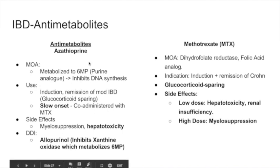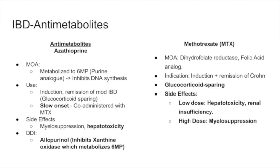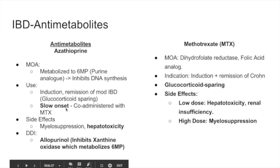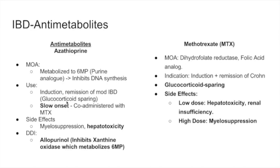The next group of IBD drugs is the anti-metabolites. The first is azathioprine — it's metabolized into 6-mercaptopurine, a purine analog that inhibits DNA synthesis. It's used for induction and remission of moderate IBD, and because it spares the patient from glucocorticoids, it's called glucocorticoid-sparing. The problem with azathioprine is its slow onset, so it is co-administered with methotrexate to accelerate recovery.